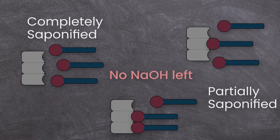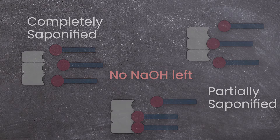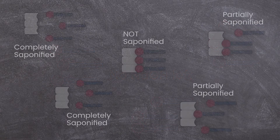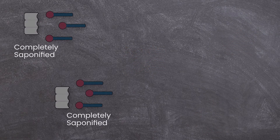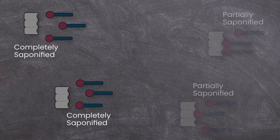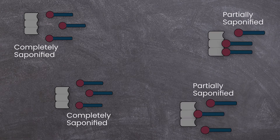But here's the point a lot of people think wrong. When you make cold process soap, you will not have any oils which are completely unsaponified. You will have a lot of molecules which are completely saponified and some which are only partially saponified.